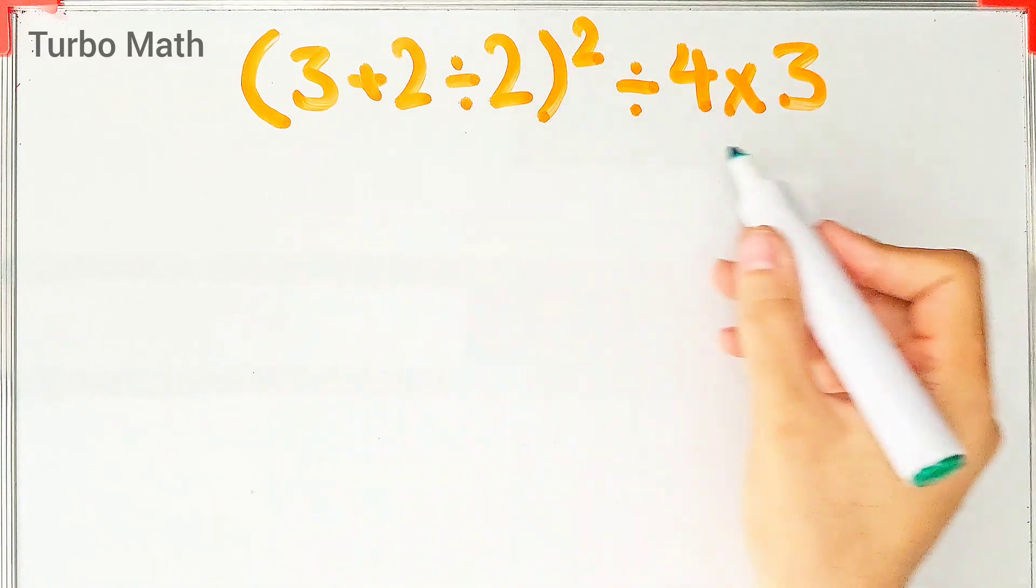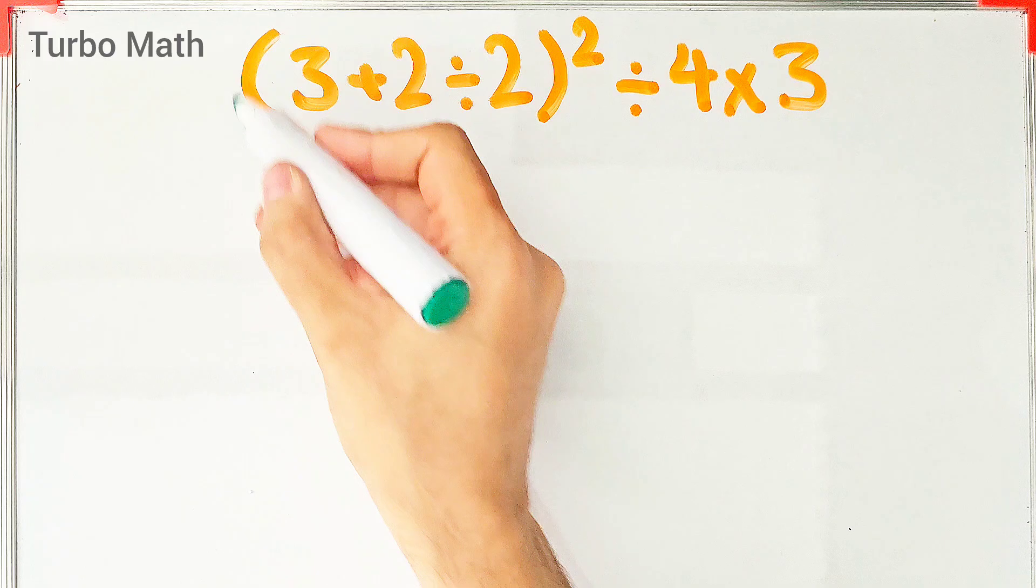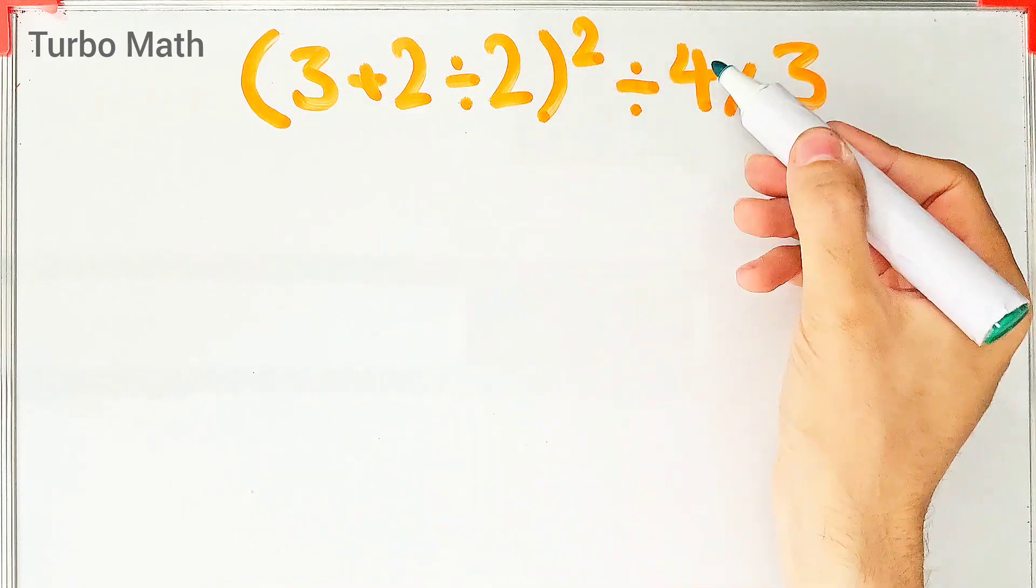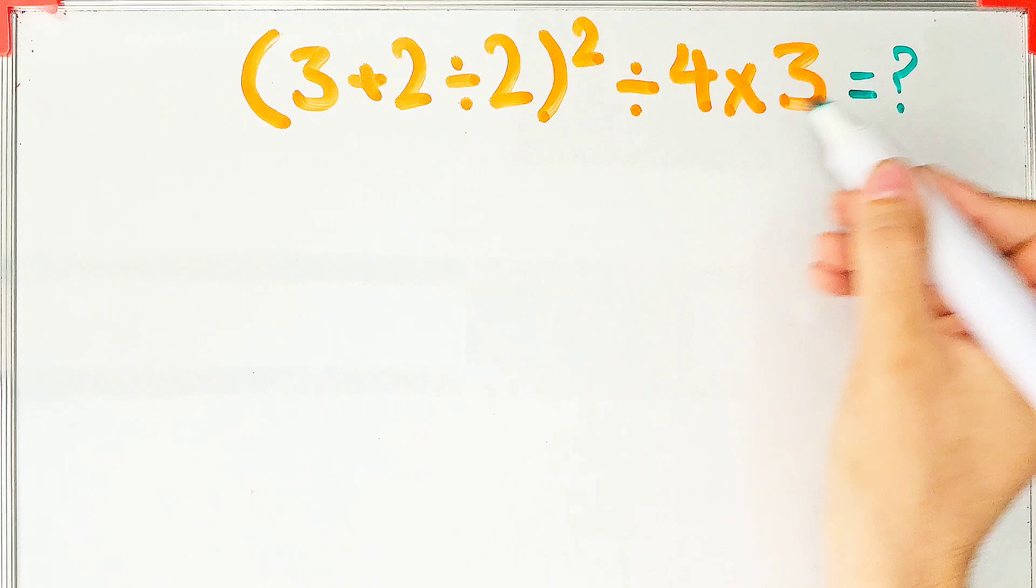Hi friends, welcome to Turbo Math channel. 3 plus 2 divided by 2, then to the power of 2, divided by 4, then times 3. What is the answer of this question? Can you solve it?